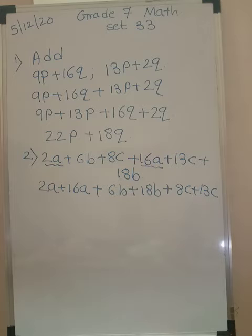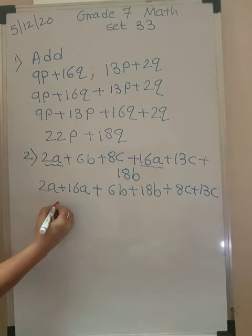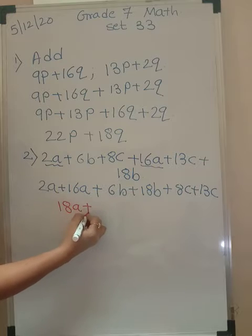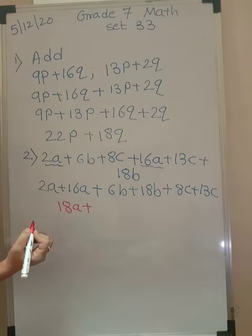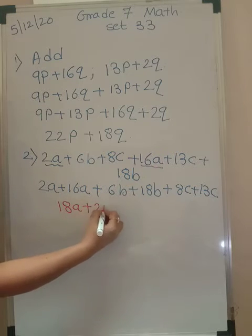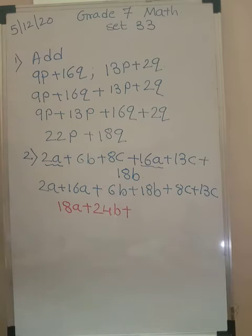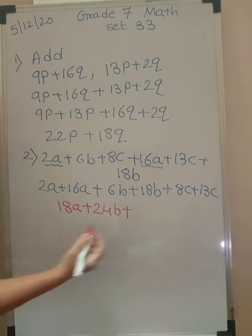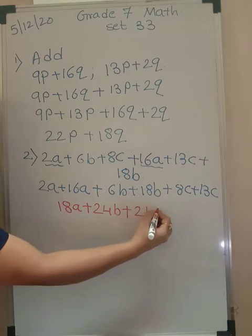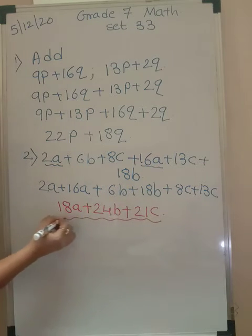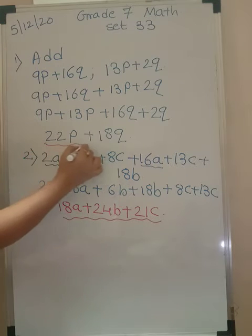2a plus 16a, plus 6b plus 18b, plus 8c plus 13c. Let us add them up. 16 plus 2 is 18, so you have 18a. 18 plus 6 is 24, so 24b. 13 plus 8 is 21, so you have 21c. So this is your final answer.